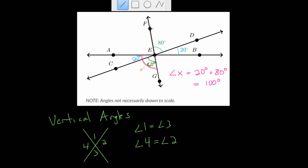That should make sense because we can compare other vertical angles here. If we focus on these intersecting lines, the vertical angles across from each other are equal. This big angle is just 80 plus 20, which is 100 degrees, and we just found that this angle is also 100 degrees — another way to look at these intersecting lines to find vertical angles.